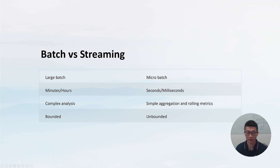Another key difference is the characteristic of the data they handle. Batch processing mainly deals with bounded data — it processes a batch at a time and doesn't continuously process data. Stream processing deals with data that arrives continuously and doesn't stop unless you stop the business processes. These are the main differences between them.